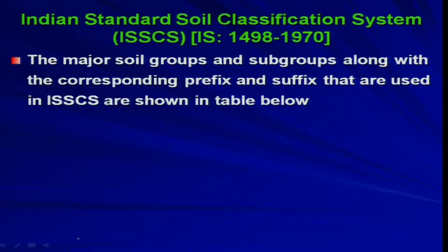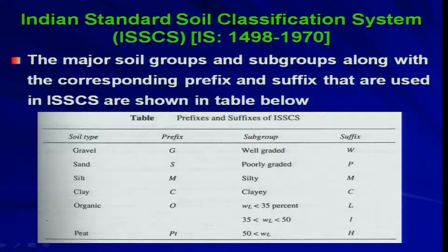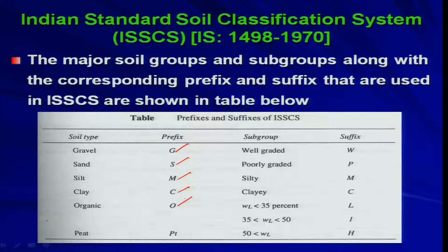The Indian Standard Soil Classification System is as per IS 1498-1970. This standard defines the major soil groups and subgroups along with the corresponding prefix and suffix used in ISCS, as shown in the table. The prefixes are: gravel — G, sand — S, silt — M, clay — C, organic soil — O, and peat — PT. These soil type terms always appear as the prefix in the notation.